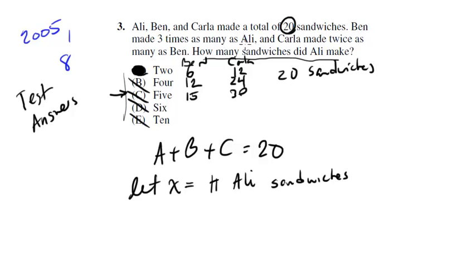So let's let x equal the number of Allie sandwiches. Now what do we know? Well Ben made 3 times as many as Allie, so then 3x is going to equal the number of Ben sandwiches. And if Carla made twice as many as Ben, well then it's going to be 2 times 3x, which is 6x, which is the number of Carla sandwiches.